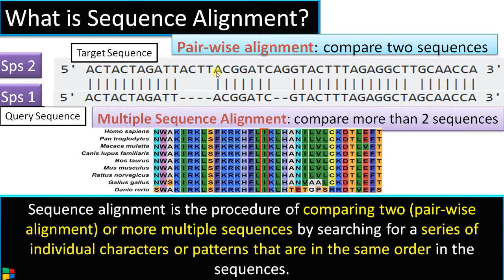The second type of alignment is multiple sequence alignment, where more than two sequences are compared. These are protein sequences or amino acids — amino acids of many species of a particular protein are aligned together. Therefore it is called multiple sequence alignment.